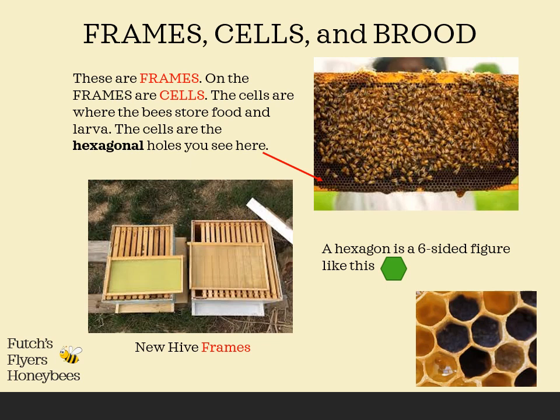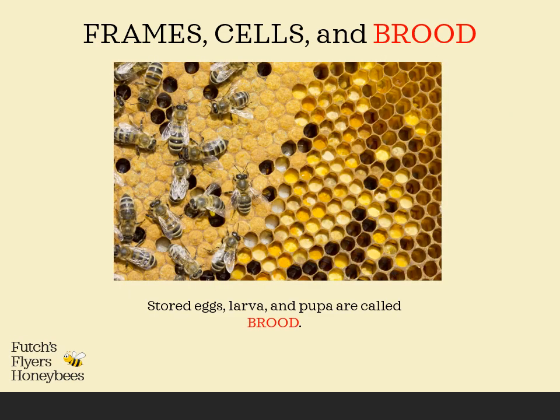Like you see in the top right, on the frames they build cells. A honeybee cell is a hexagon, which is a six-sided figure, like you see in the bottom right hand corner.